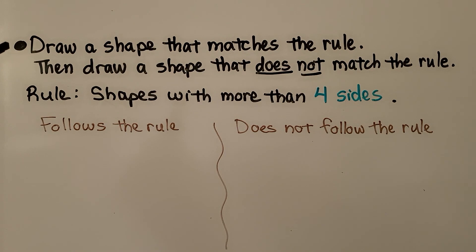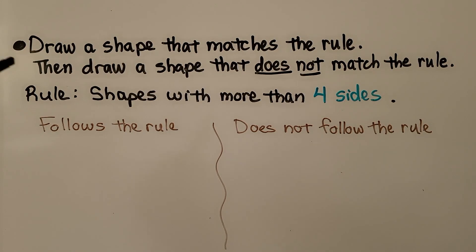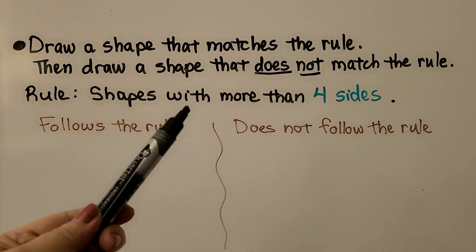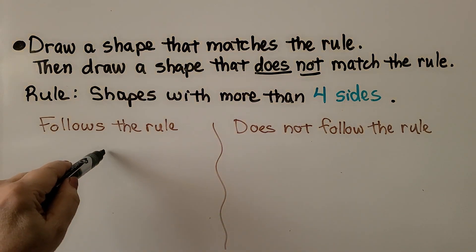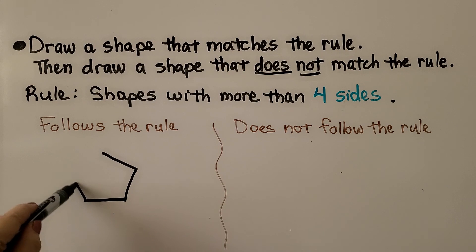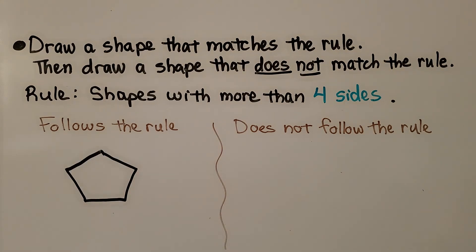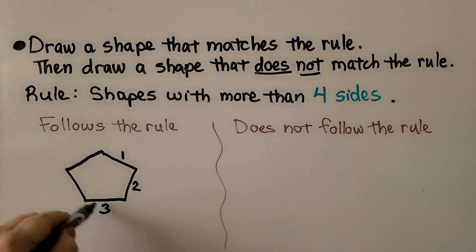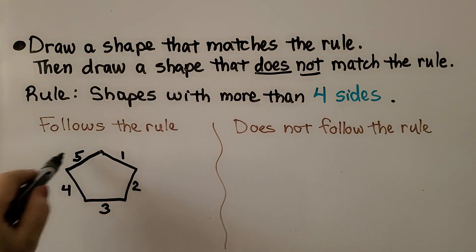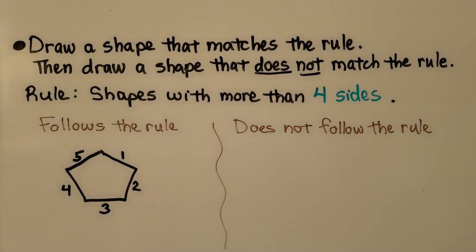It's telling us to draw a shape that matches the rule, then draw a shape that does not match the rule. The rule is shapes with more than four sides. So we need to draw a shape with more than four sides. We can draw one, two, three, four, five sides — that follows the rule. It has more than four sides, and we know that means it has five angles.